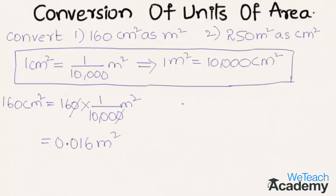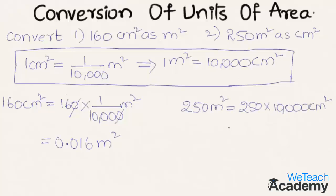For the second example, we convert 250 meter square to centimeter square. We write 250 meter square is equal to 250 into ten thousand centimeters square, which gives us the result as twenty-five lakhs centimeters square.